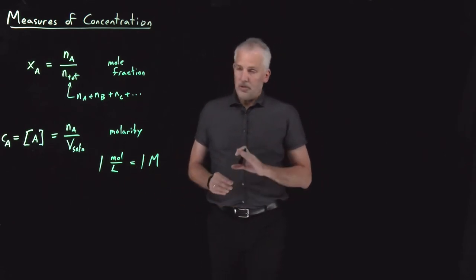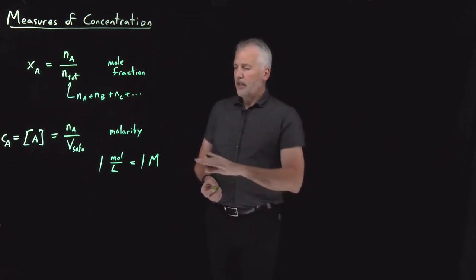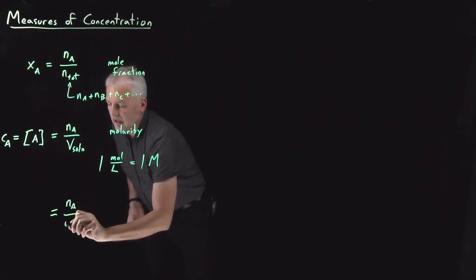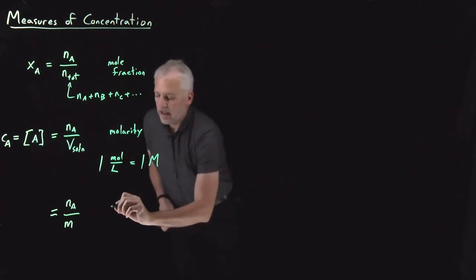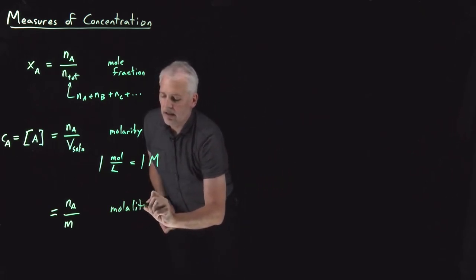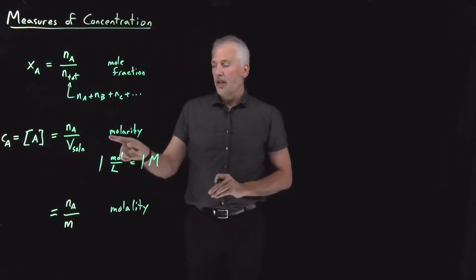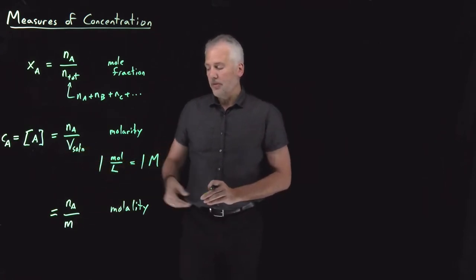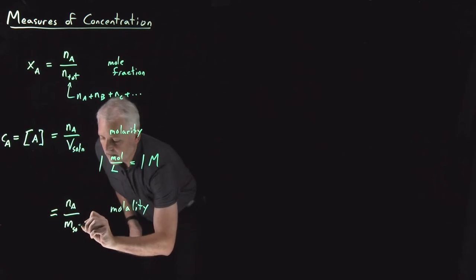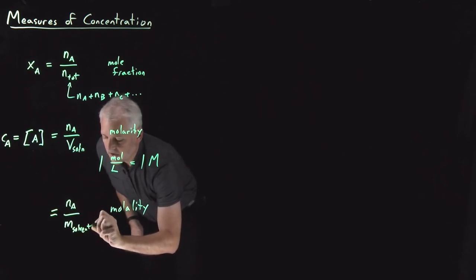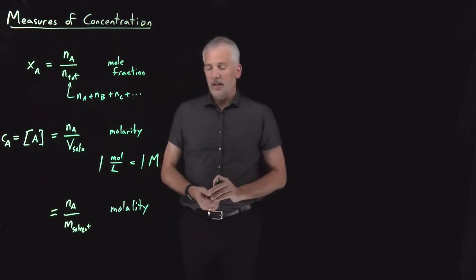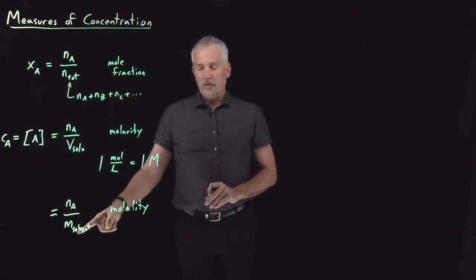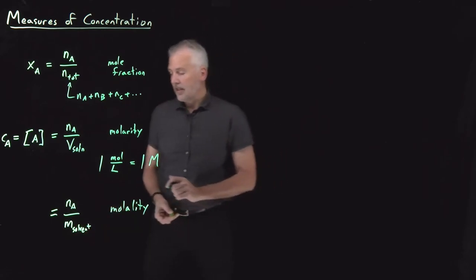There are many units of concentration, but a third important one that is often more convenient — though perhaps less familiar — is molality. Molality often turns out to be more convenient than molarity, mainly because we replace the volume with a mass. Rather than talking about the volume of solution, we talk about the mass of the solvent alone, without the solute. So concentration defined as amount of solute divided by the mass of the solvent is called molality.